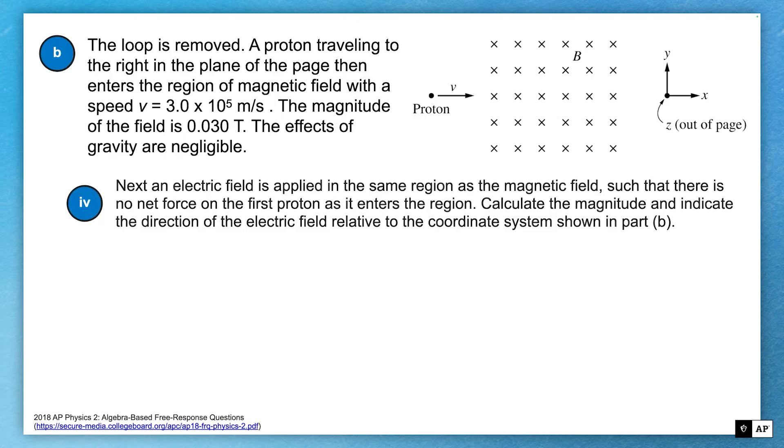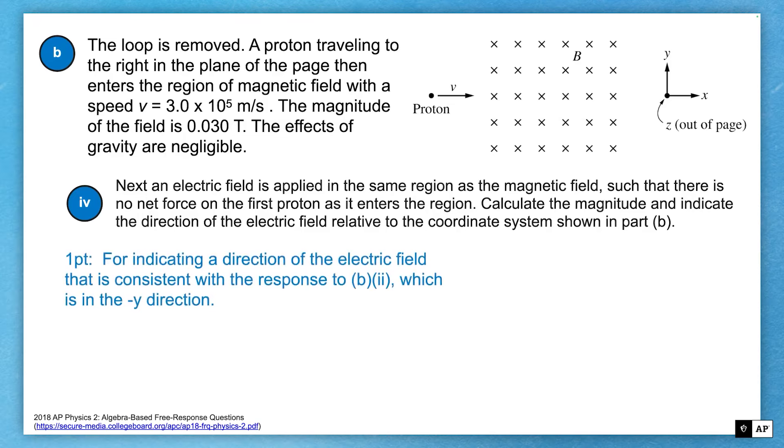And the last thing it asks us to do, I think this is the last one, is they say that an electric field is applied to the same region as the magnetic field. Calculate the magnitude and indicate the direction. Magnitude and direction. Make sure you read the questions very closely, because a lot of times you can see all the different things they're asking for, and you can figure out how many points this part's worth. They want the magnitude, and they want the direction. Let's see if we can figure that out. For any kind of direction, an electric field that is consistent with a response from part B2. So if you made a mistake in B2, and it was curved downwards, then upwards would be okay. But since the particle curved upwards because of the magnetic force, then you would want an electric field pointing downwards. And you'll notice that they give you kind of a little axis here, which in this case would be negative Y. Down would be okay as well.